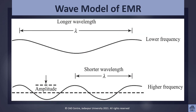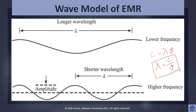Since C = λν, we can derive that λ = C/ν. This means wavelength and frequency are inversely proportional — if we have a longer wavelength, we will have a lower frequency, and for shorter wavelengths we will have higher frequency.